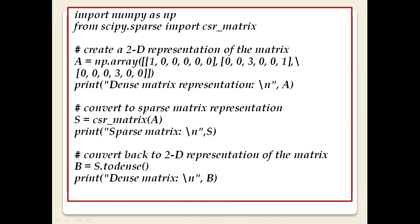Then we convert back to dense form using the todense() function. The variable S contains the sparse matrix representation. We call S.todense() and assign it to B, then print B as the dense matrix. Each line of this code should be clear before we move to the implementation in Python using Spyder.